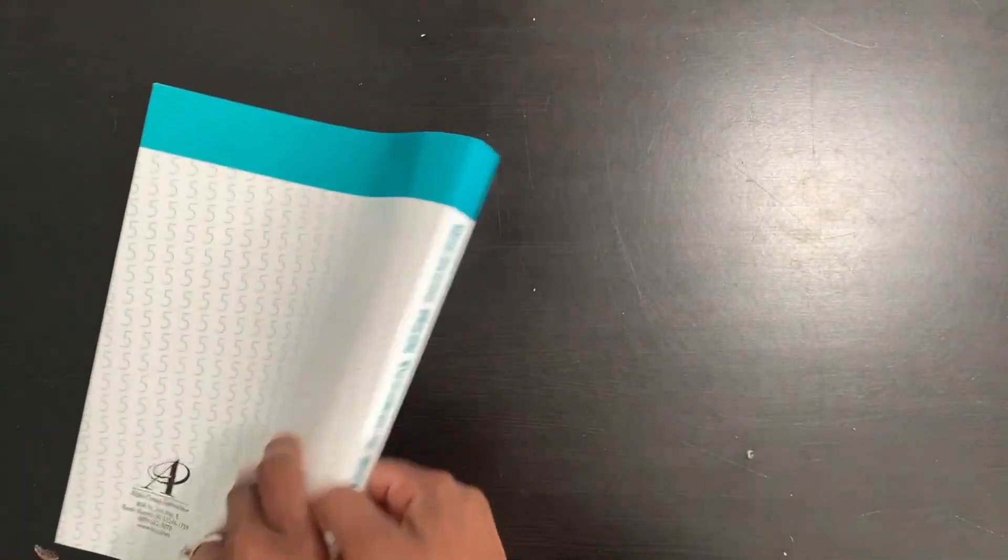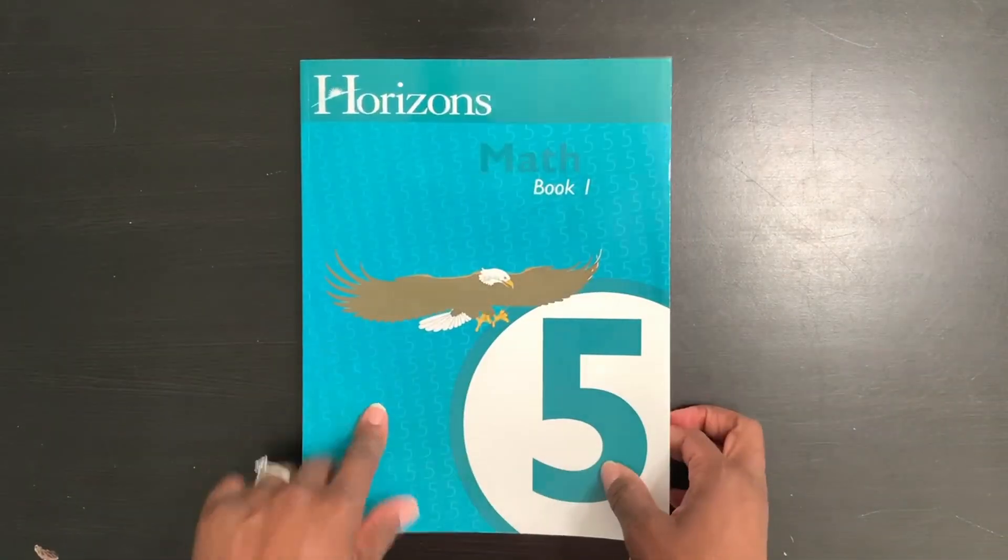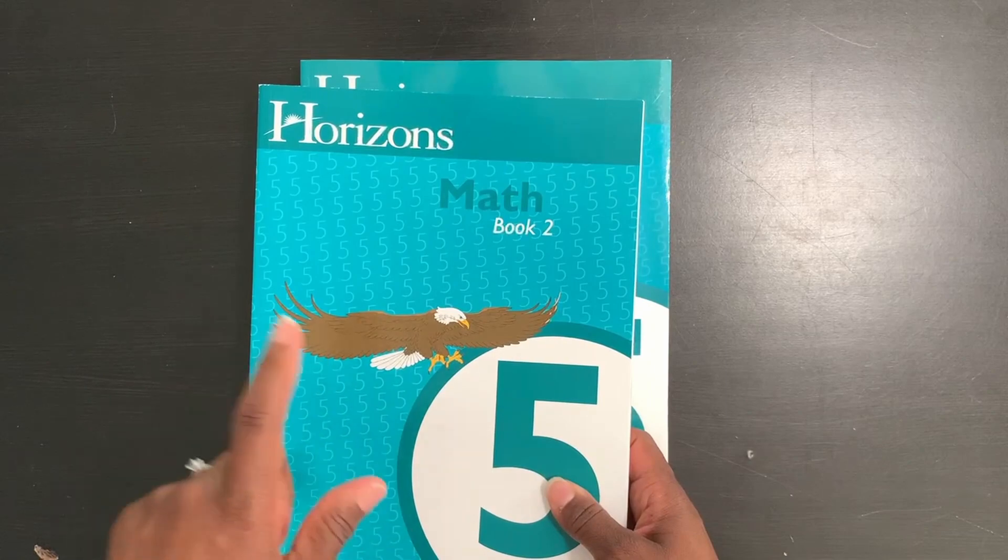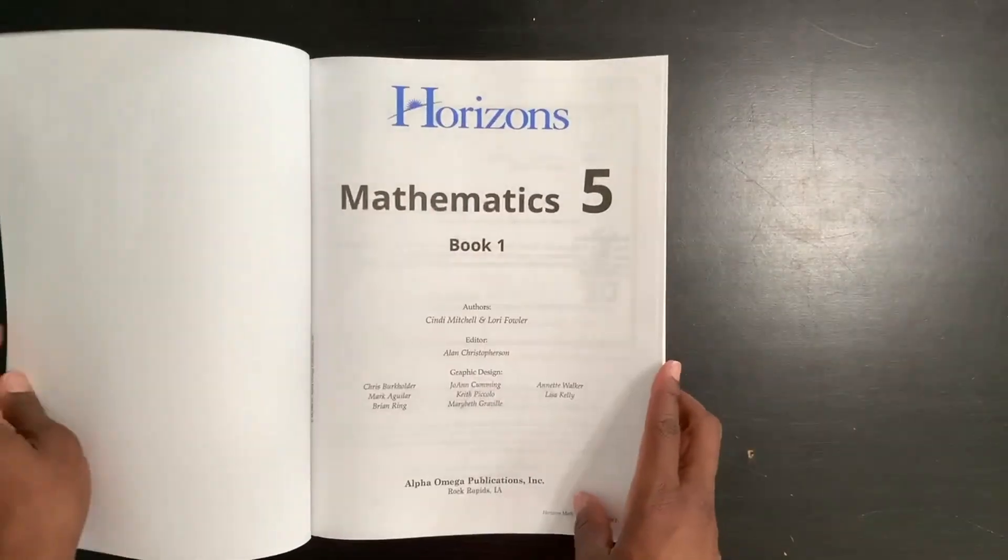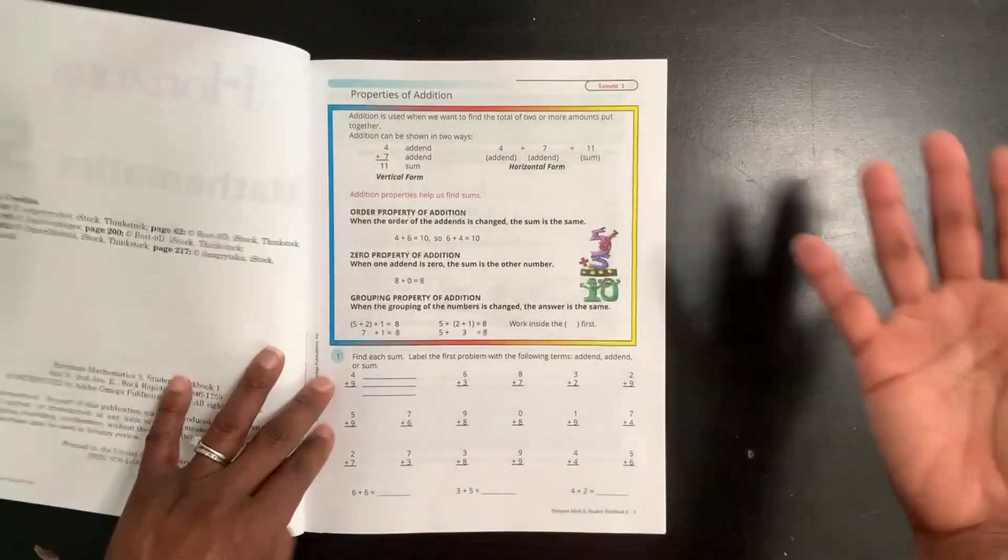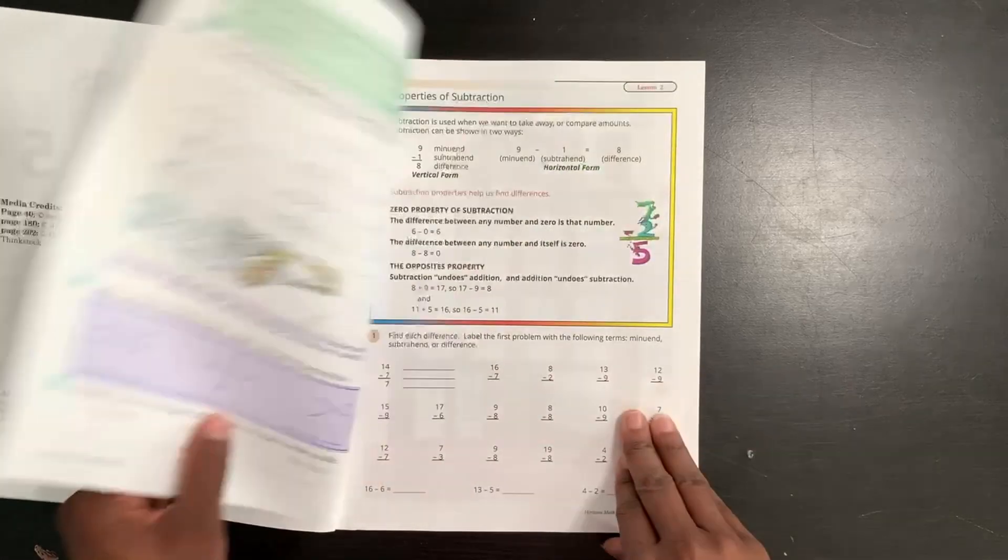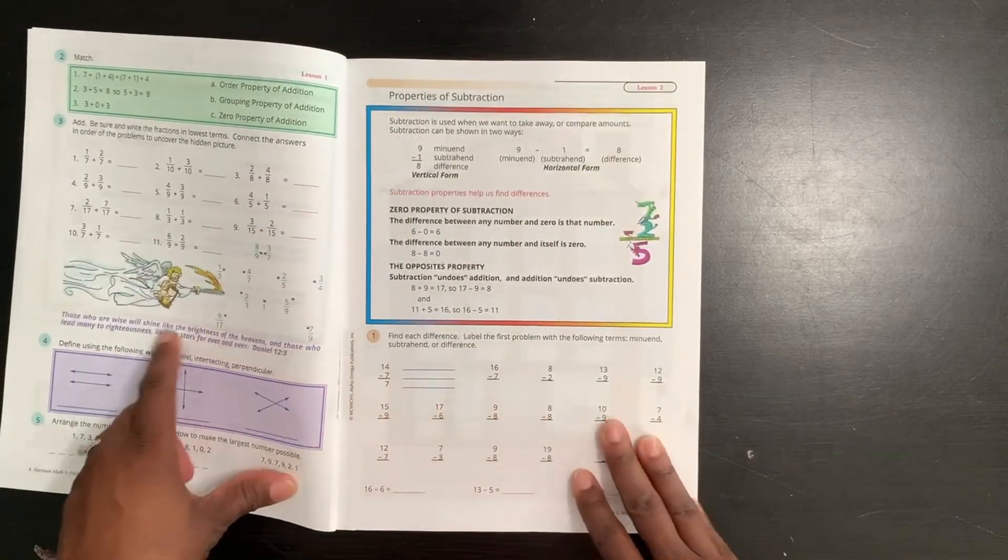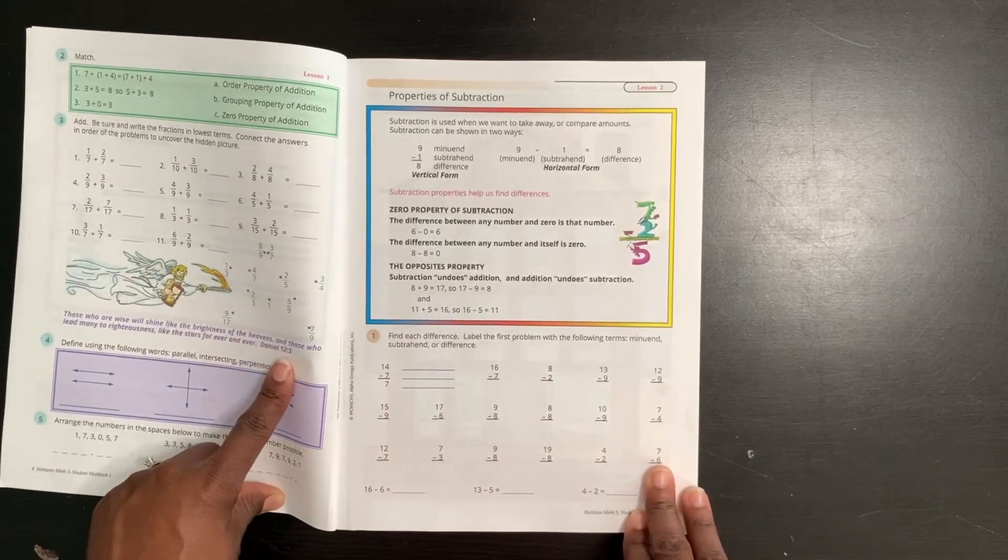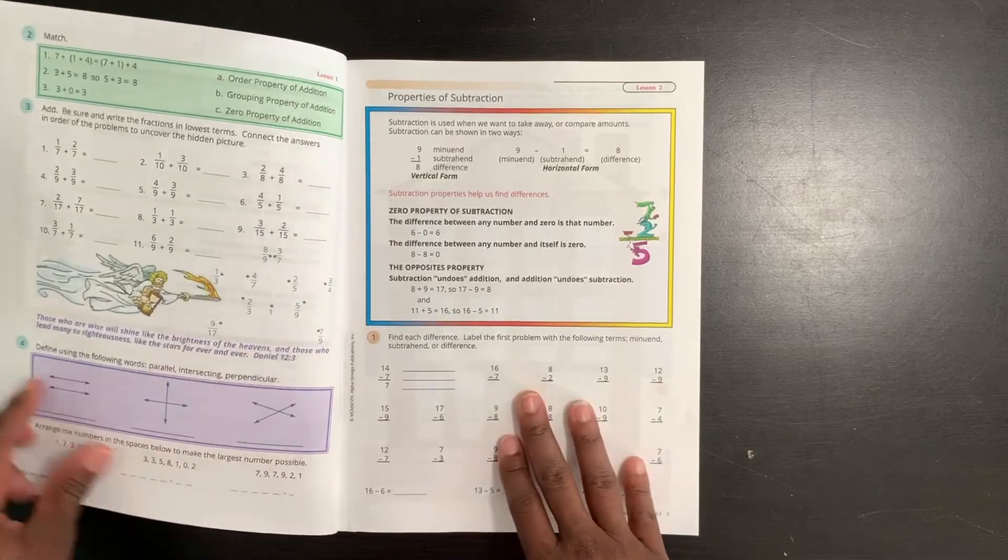Let's take a look into the actual student workbook. You're going to have two workbooks. This one is going to cover lessons one through 80. And this one will cover 81 through 160. When you open it up, you're simply just going to open right up to a lesson. So much color. I love that. And my daughter loves it too. She loves all of the color and everything that goes along with it. As I said before, you will find some scripture reference within the lessons. Here's that same scripture that was in the teacher's lesson instruction book. It is also here in the student manual.